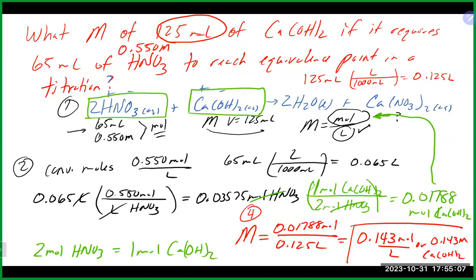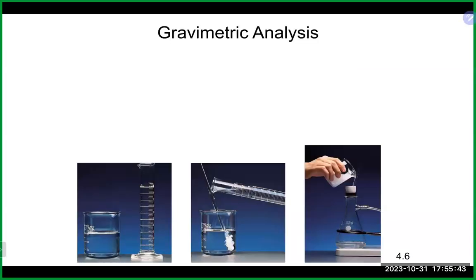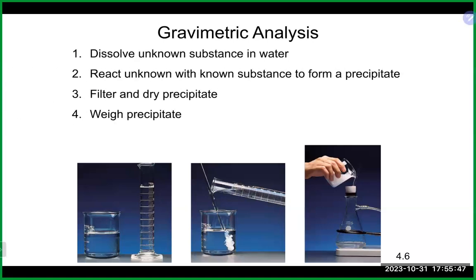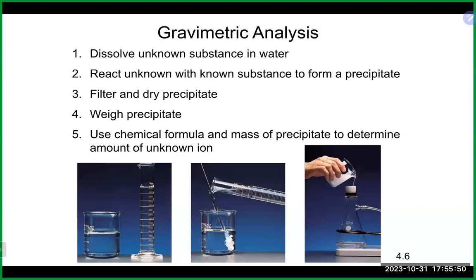Any questions on titration problems? The same steps apply — using molarity and volume to get moles, and at the end either calculating molarity or using given molarity to calculate volume. Now let's go back and talk about another type of solution stoichiometry problem we skipped earlier: gravimetric analysis.